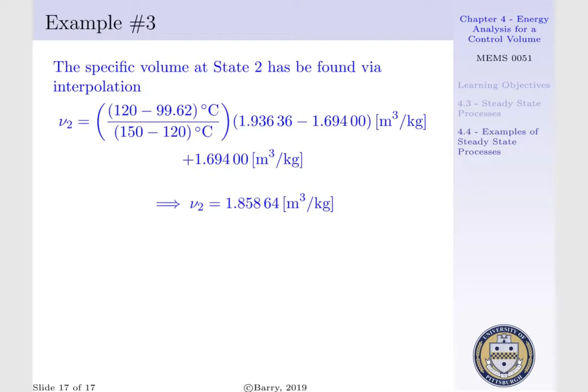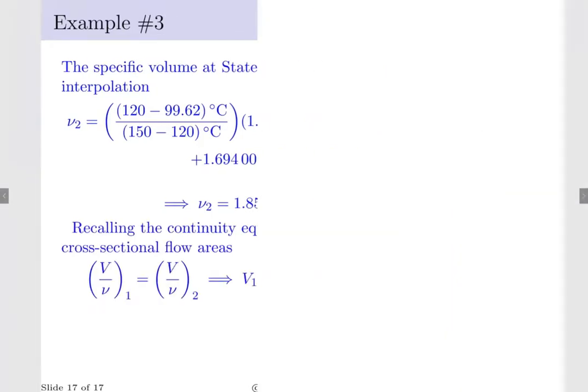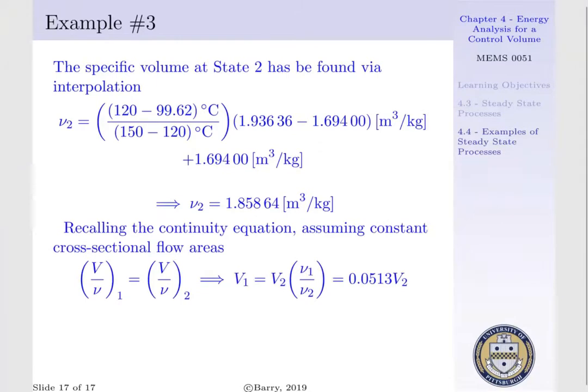Now, recall the one main assumption about a throttle. Our mass flow in is equal to our mass flow out. Thus, our density times cross-sectional area times velocity at state 1 has to be equal to our density times cross-sectional area times velocity at state 2. We assume we had a constant cross-sectional flow area and re-express our density in terms of specific volume. Our continuity equation becomes our velocity per specific volume at state 1 is equal to our velocity per specific volume at state 2. However, since our specific volumes at state 1 and state 2 differ due to temperature and pressure effects, we see V1 would be equal to V2 per nu1 per nu2, or our velocity at state 1 is equal to 0.0513 V2.